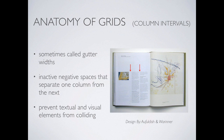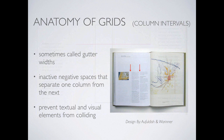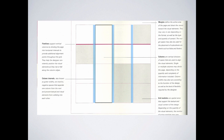Then we move into something called a column interval or gutter width — the space between the columns. You have to have this space to identify what the columns are, otherwise they run together. In text especially, without space between columns it would be very hard to distinguish where one column ended and another began. So we put a column interval in between to let the columns breathe. It's an inactive negative space — just the color of the background — and it prevents elements from colliding together on the page.